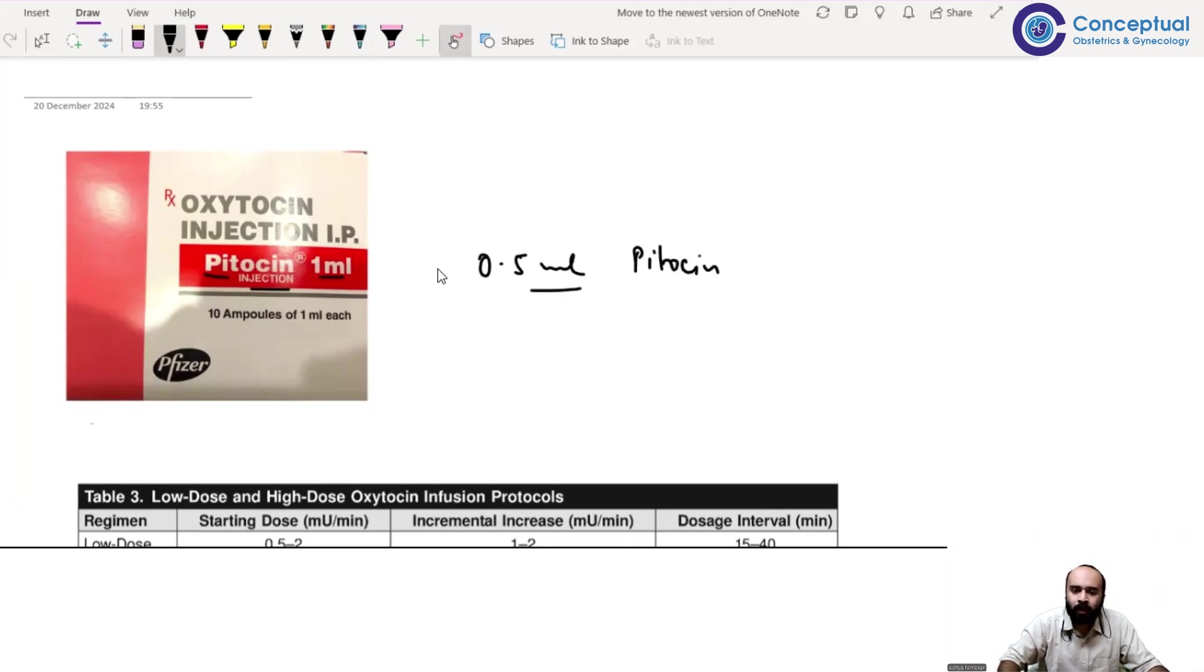In this 1 ml ampoule, it contains 10 units or 10 international units. International units and units is the same, so 10 units. Whereas 0.5 ml obviously contains 5 units. Half of 1 ml is 0.5, so 5 units. We get both boxes. It depends on your hospital whether it procures 1 ml or 0.5 ml ampoules. So 10 units or 5 units, this you need to remember.